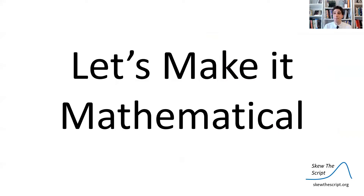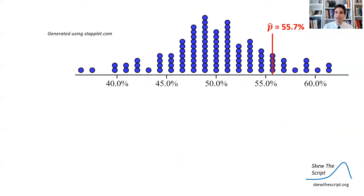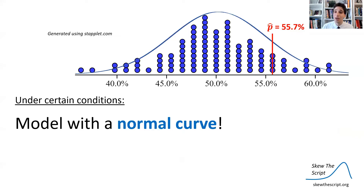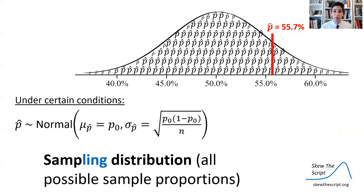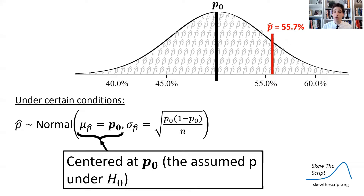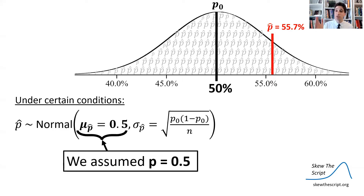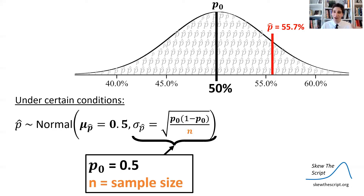So let's take this analysis and make it more mathematical — really formalize it. We can take our simulations and put a distribution on top of them. What you might notice is that our simulated seasons kind of look like a normal curve, and it turns out we can model it with a normal curve. Specifically, we can use the sampling distribution for a proportion — all possible sample proportions we would see under the null assumption that you win about 50% of your games with no home court advantage. We can see that this normal curve, if we make this assumption, is centered at p-naught, the assumed probability of the home team winning under the null hypothesis, assumed to be 50%. And we use that formula we've seen before for the standard deviation. Plugging in p-naught = 0.5 and sample size n = 88, we get a standard deviation of 0.053.